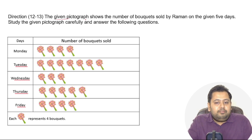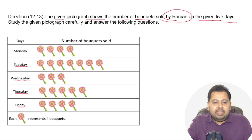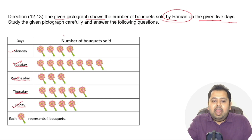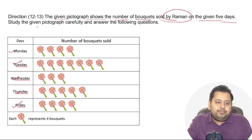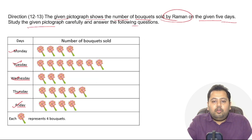The question says: the given pictograph shows the number of bouquets sold by Raman over five days — Monday, Tuesday, Wednesday, Thursday, and Friday. Raman is selling flower bouquets. Study the given pictograph carefully and answer the following questions.